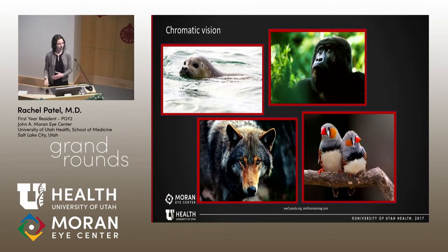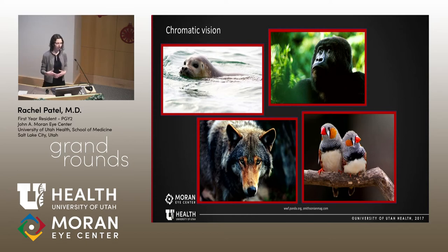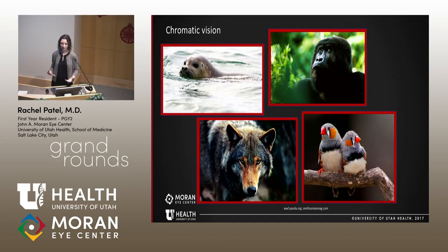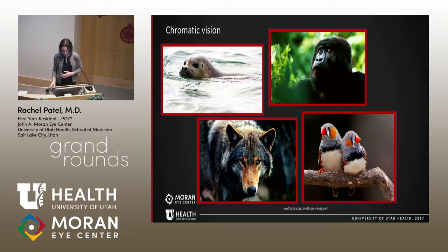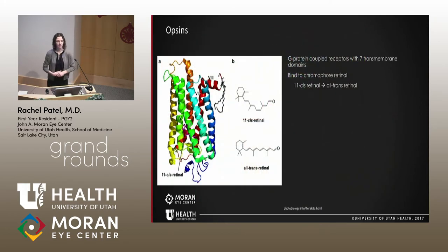Humans are trichromats, but that is fairly unusual in the animal kingdom. Chromacy refers to the number of primary colors whose combination or subtraction results in the visible spectrum we see. Many familiar animals — wolves, cats, dogs — tend to be dichromats, having two types of opsin proteins. Many sea mammals like walruses and seals are monochromatic. Humans and some related primates including gorillas are trichromats, while birds and fish tend toward tetrachromacy with visibility into the UV spectrum.